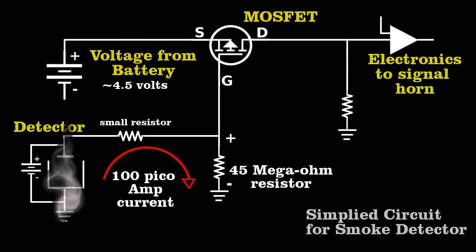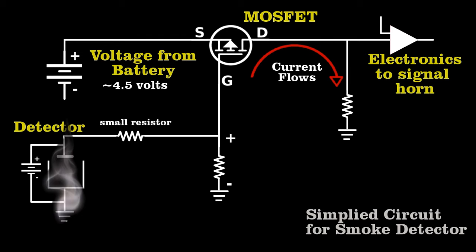If smoke enters the chamber, the tiny current stops. The MOSFET allows current to flow in this section of the circuit, which triggers the horn.